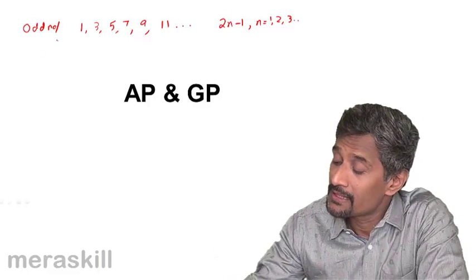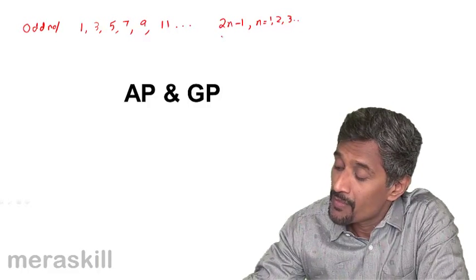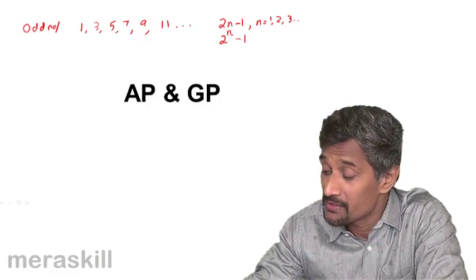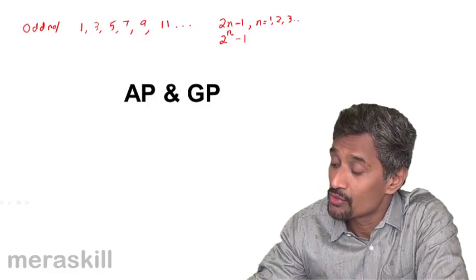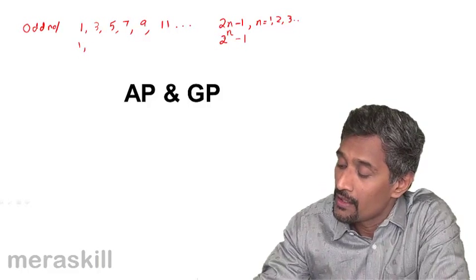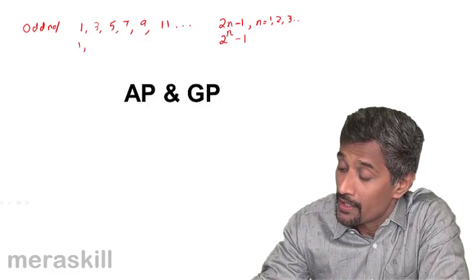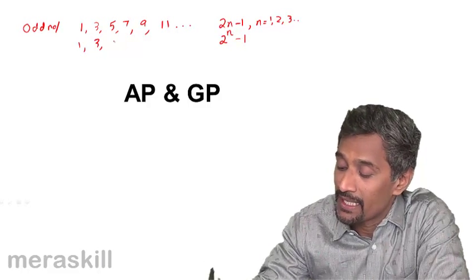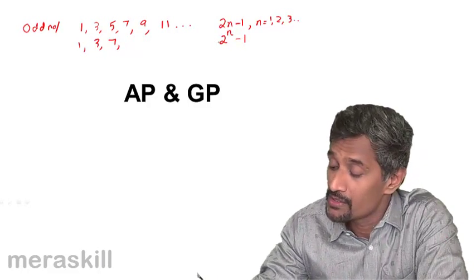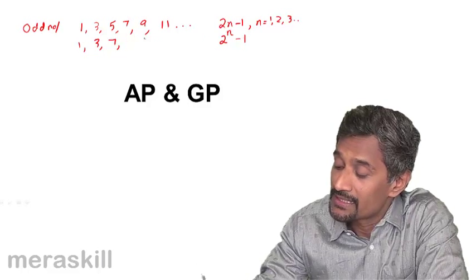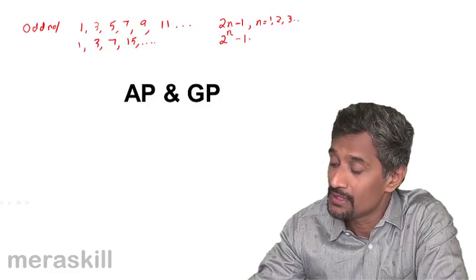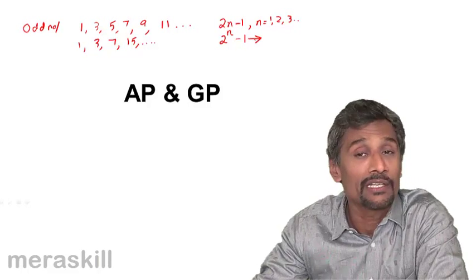You may even have something like 2 raised to n-1, a sequence which could be defined by this. So in that case, you could be getting again 1, 2 raised to 2, 2 raised to 4-1 which is 3, so 2 raised to 3 is 8-1, which is 7, and so on and so forth. 2 raised to 4, that is 16-1, which is 15. So this is a different kind of a sequence which is defined by this particular formula.